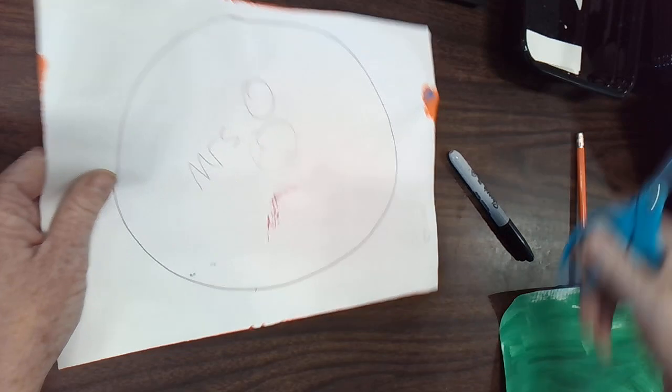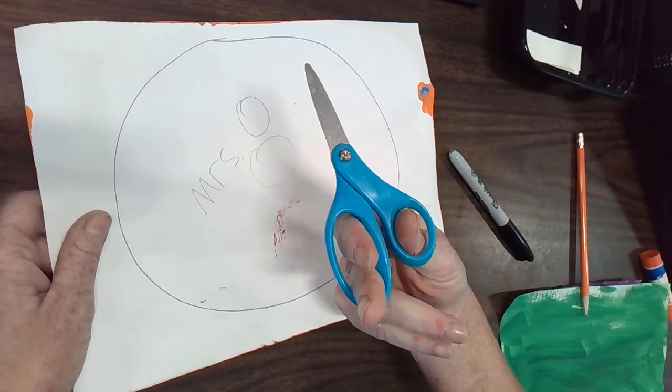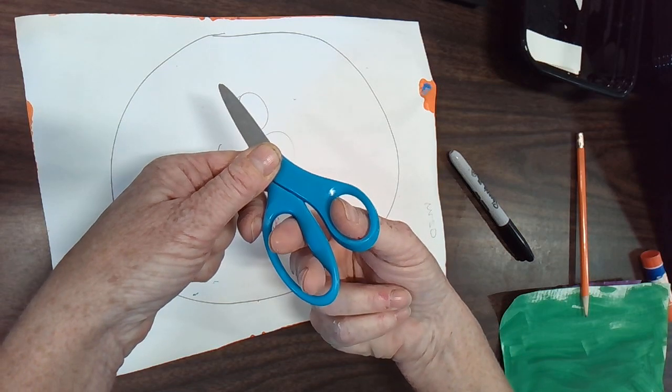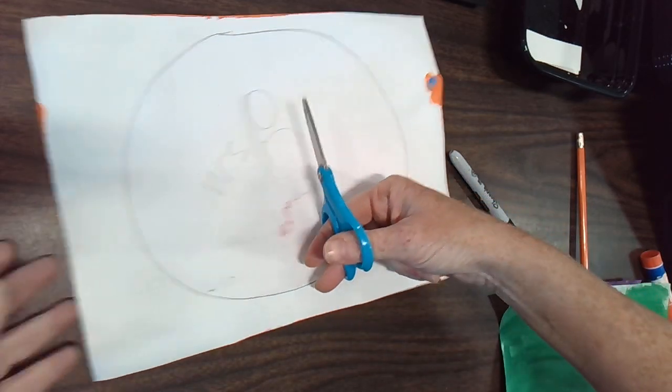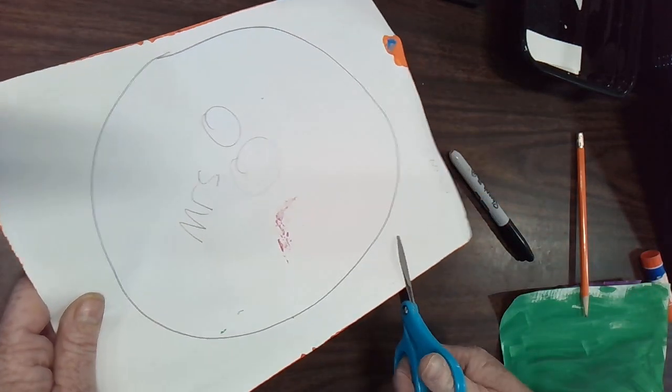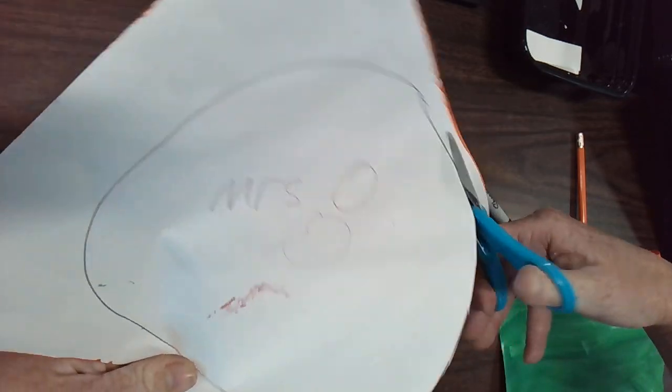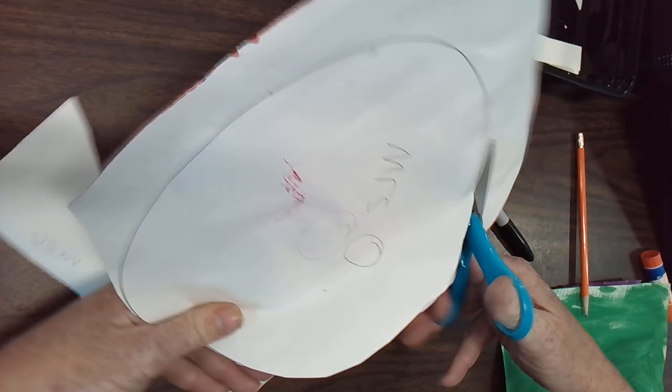Once you have your large circle, you're going to be using your scissors. Remember, our thumb goes in the small hole, our fingers go in the larger hole. Our thumb goes on top and we open and close and cut right around on our circle to make our pumpkin.